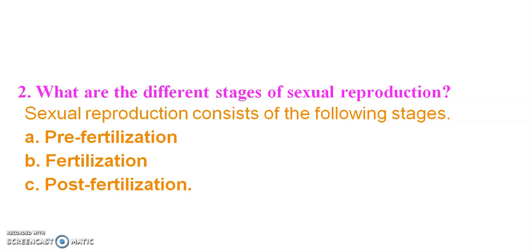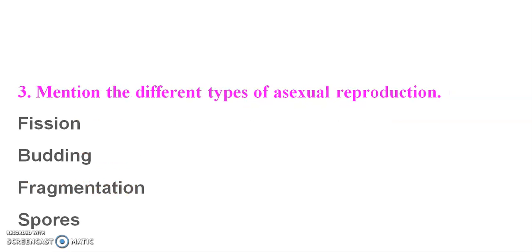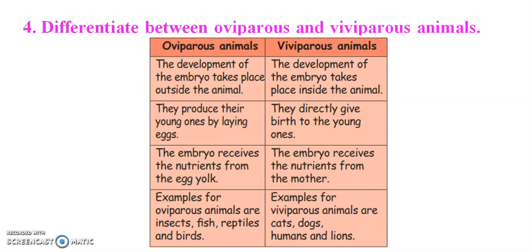What are the different stages of sexual reproduction? The stages are: pre-fertilization, fertilization, and post-fertilization. The different types of asexual reproduction are: fission, budding, fragmentation, and spores. This is the difference between oviparous and viviparous.